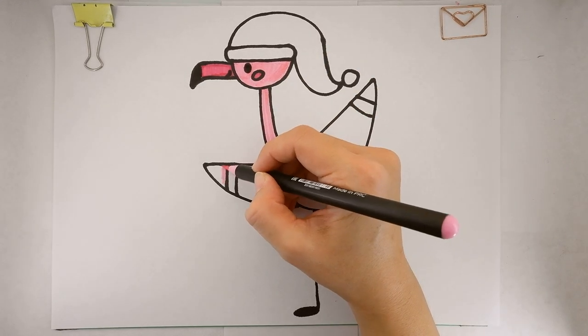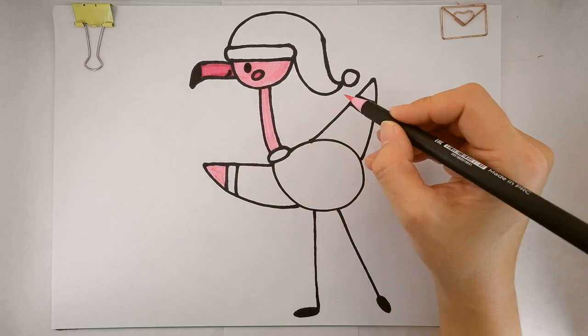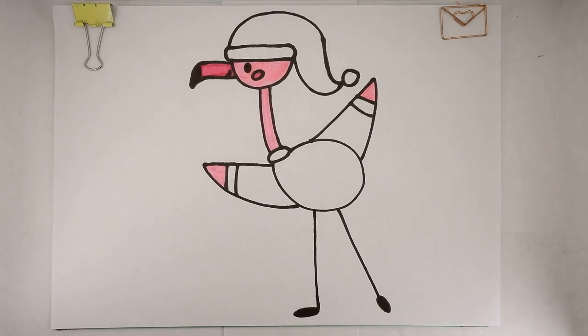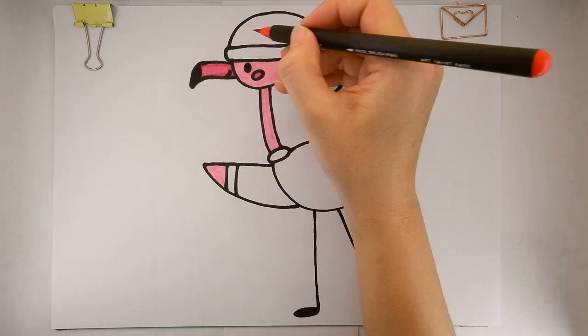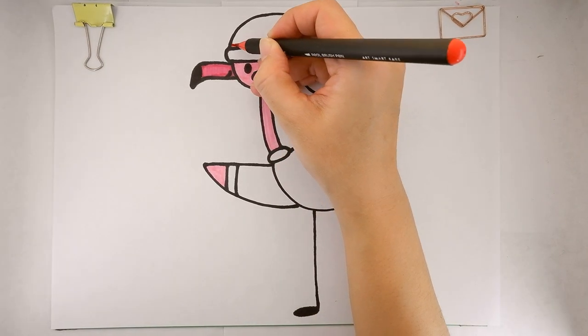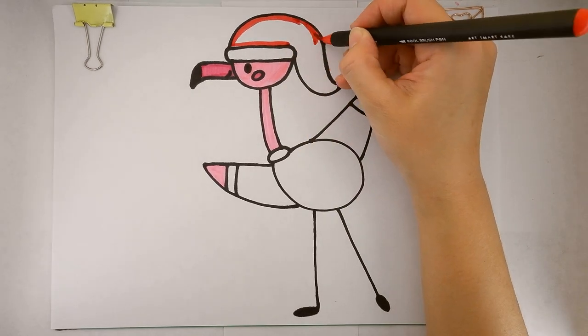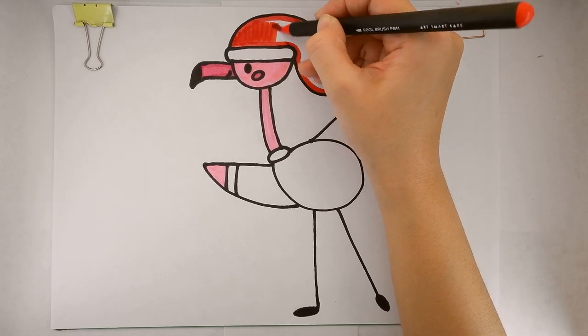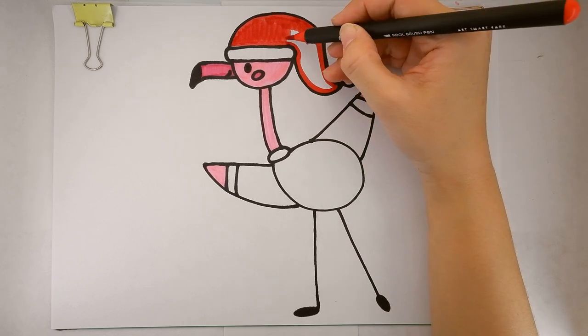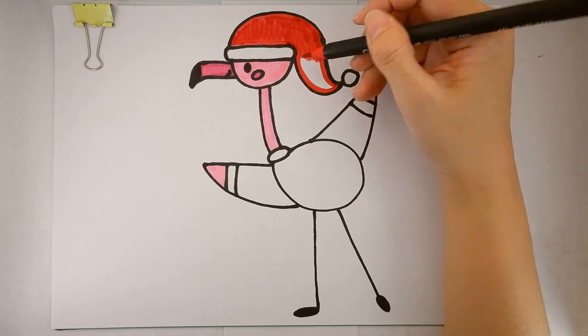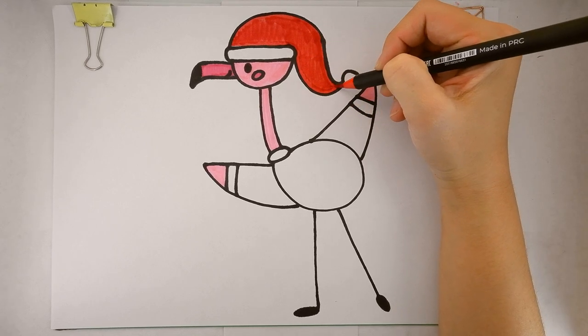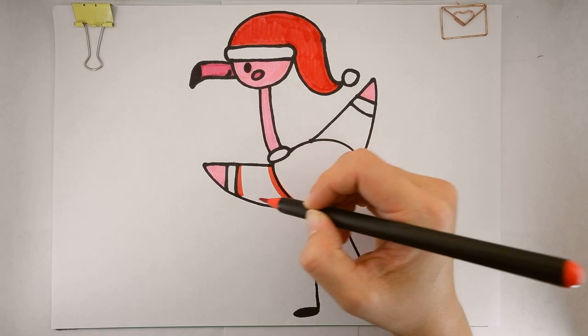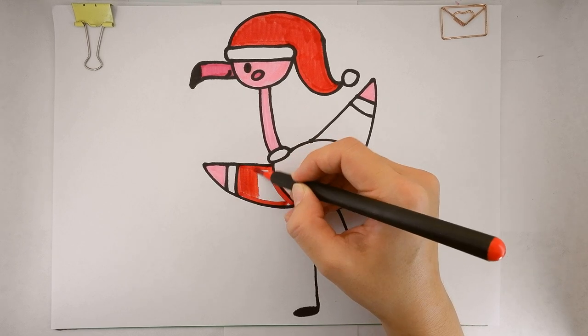If you miss a spot, fill it with color by tracing and coloring inside. Then I choose red for the Christmas hat. Tracing and coloring inside. Let's try to carefully trace along the pencil line and not go beyond the line.